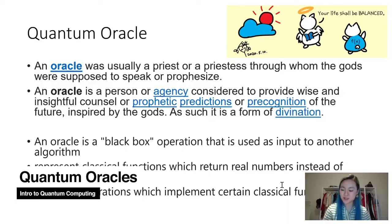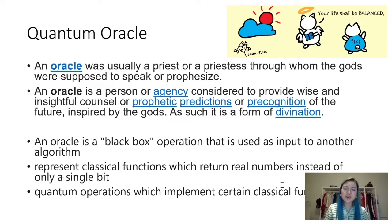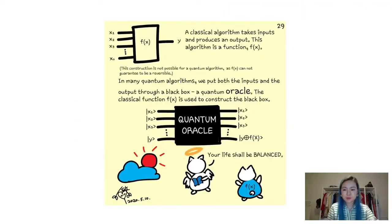Before we go to the algorithms, there's a concept called oracles. I'm very perplexed. Why do we call these things oracles? Like I was trying to look up on the definition of oracles. So there's also there's the theological definition. So that's what this cartoon is trying to show. But also in quantum computing we have this quantum oracles that's basically a black box. And there are also a lot of different ways to define it. Sometimes people say it's an operation that is used as input to another algorithm. Sometimes people say it's a represent classical functions that return real numbers instead of only a single bit. There's also definitions saying quantum operations which implement certain classical functions. These are just words and it's not that useful. So let's turn them into more intuitive pictures.